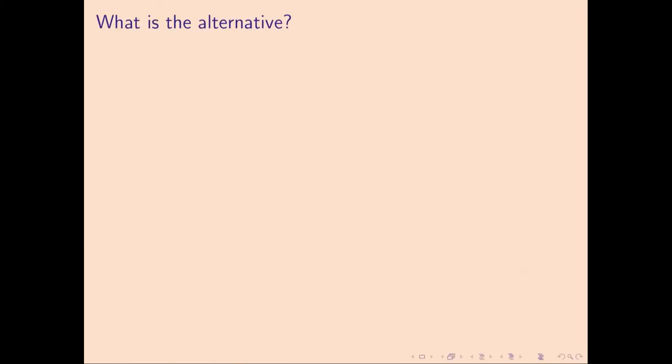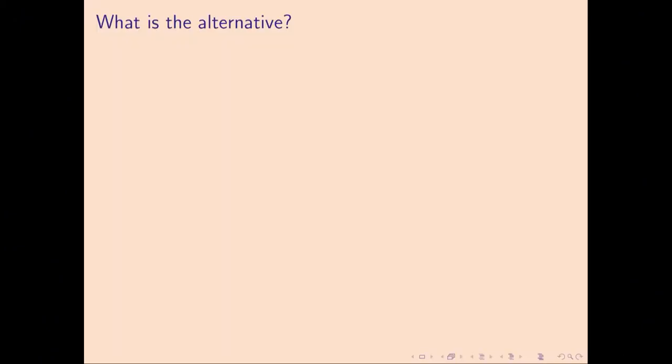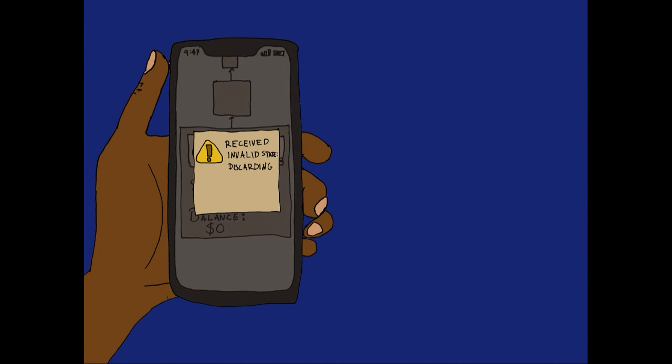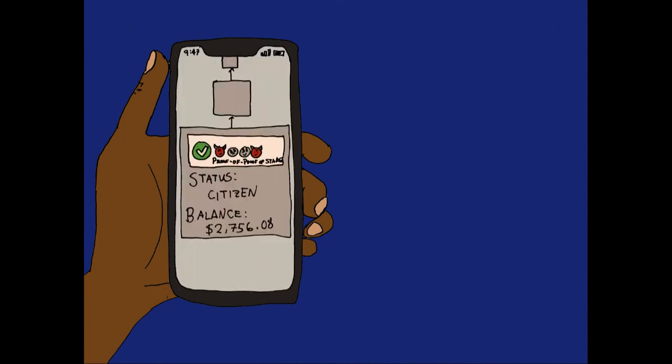Now let's revisit the alternative scenario. How would it play out where a coalition of the most powerful conspires to produce some block? They try and do it — the same demon creates this evil red block. This is perhaps the user's screen for a split second, but then a modal pops up and says: we received an invalid state, so we're going to discard it. And they'd have their usual view of the world — or in an ideal world, you could go even further.